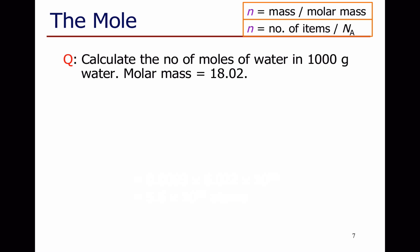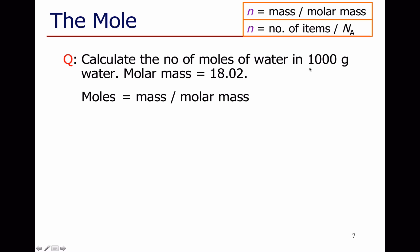Second example: calculate the number of moles of water in 1,000 grams. The molar mass of water is 18.02. The number of moles is the mass divided by the molar mass. Clearly, I've got a molar mass of 18 and many more grams of water, so I've got many more than one mole. The mass is 1,000, the molar mass is 18.02 — work that out: 55.49 moles.